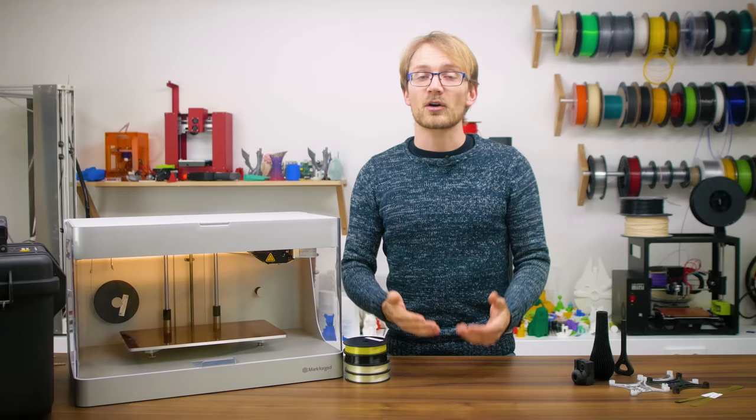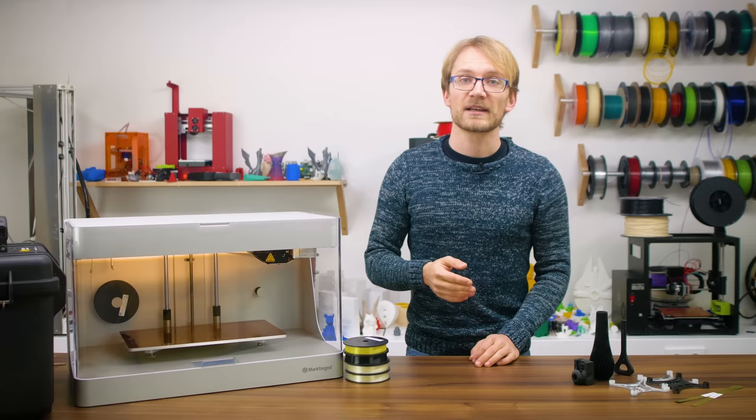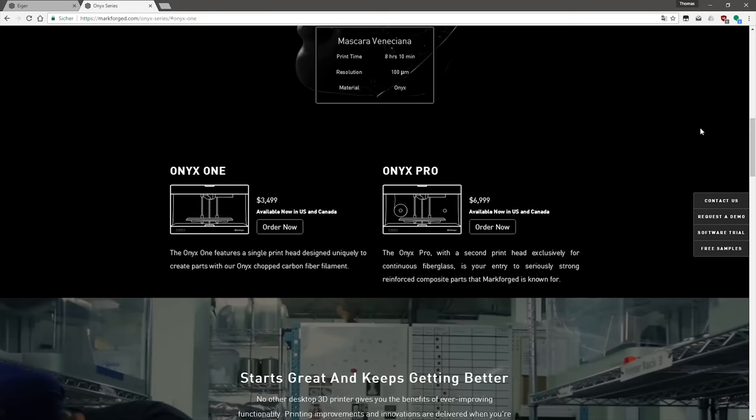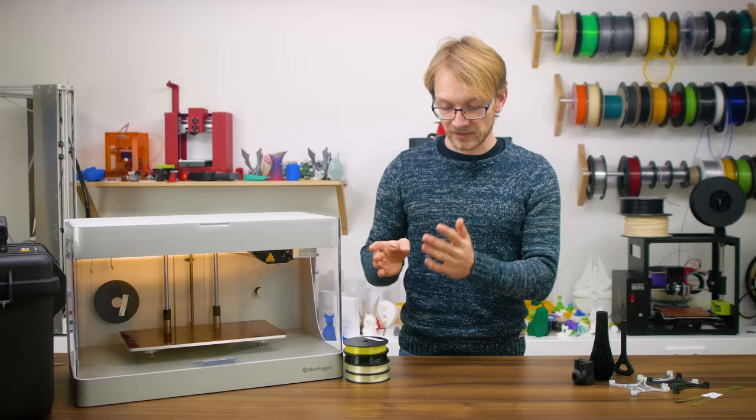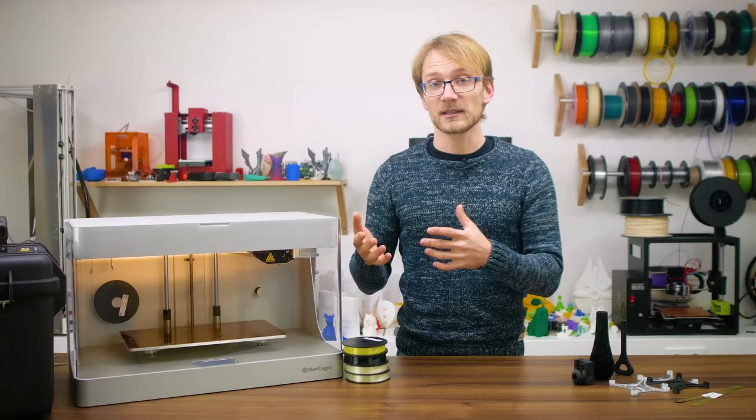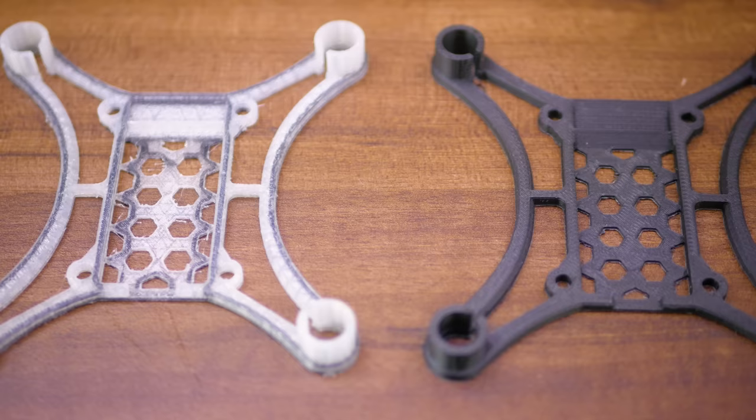While that's already quite a nice material, the interesting bits start to come into play as you move up to the Onyx Pro, which adds that two-part toolhead that lets you print continuous fiber, in the case of the Onyx Pro only fiberglass. Unlike the bare Onyx material or other chopped fiber filaments, you actually get these longer, continuous strands of fiber laid into your parts.